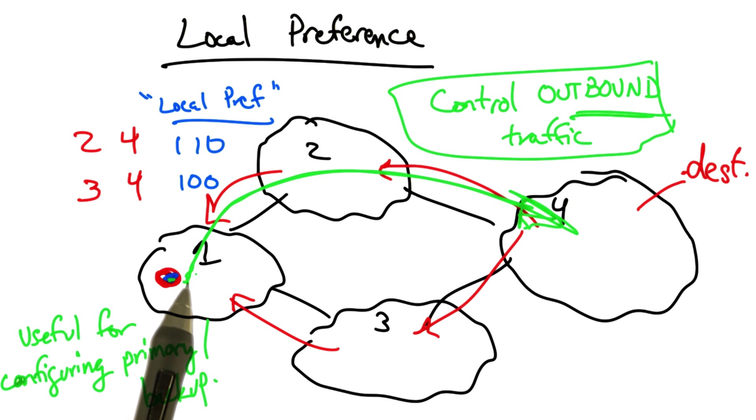For example, here, the route through AS2 might be the primary route, and the route through AS3 is the backup route.